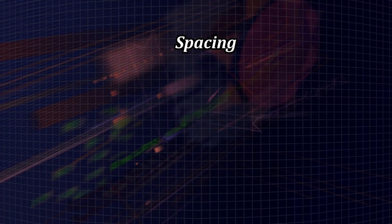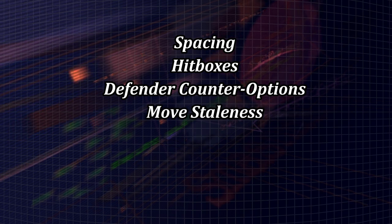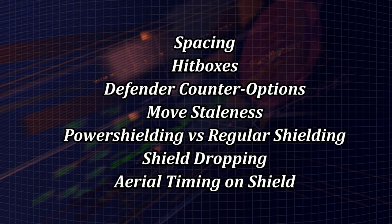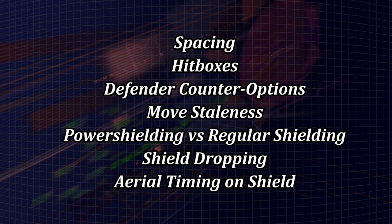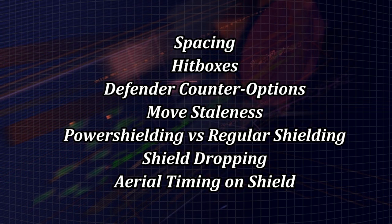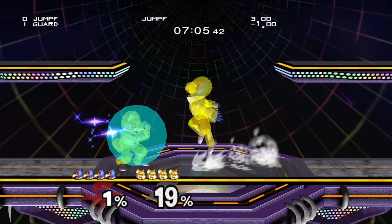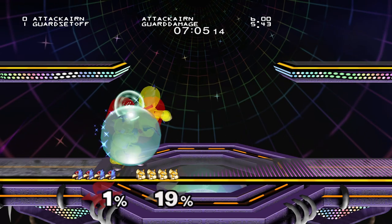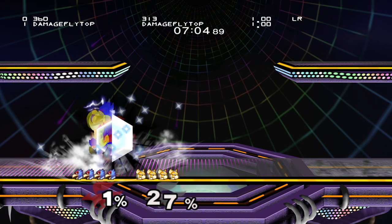The variables are: spacing, hitboxes, defender counter options, move staleness, power shielding versus regular shielding, shield dropping, and aerial timing on shield. We're going to keep using grounded attack examples like f-tilt because they're a lot easier to calculate. I am going to cover aerial shield pressure at the end, but I think it's important you have a solid grasp on all the relevant variables beforehand, as aerial shield pressure is a lot more complicated.